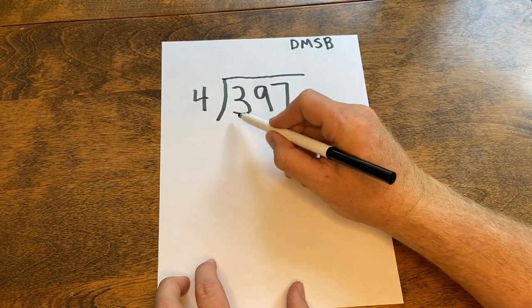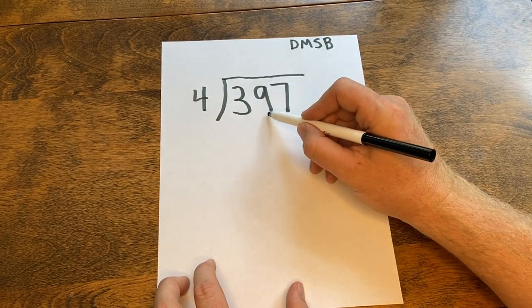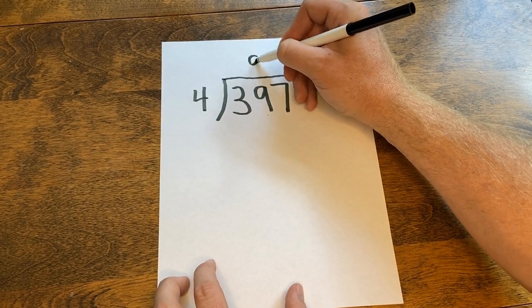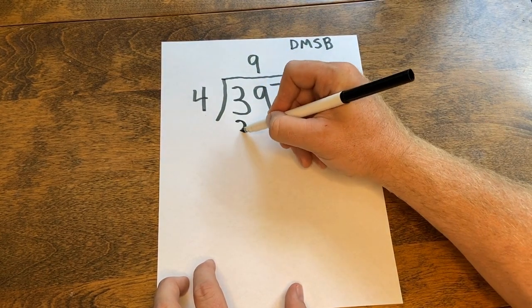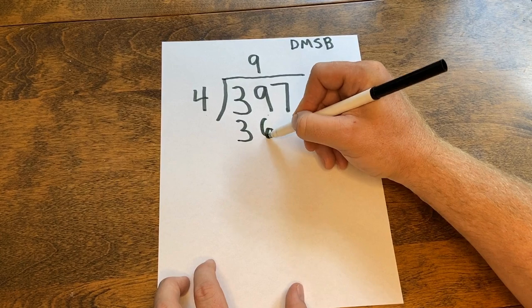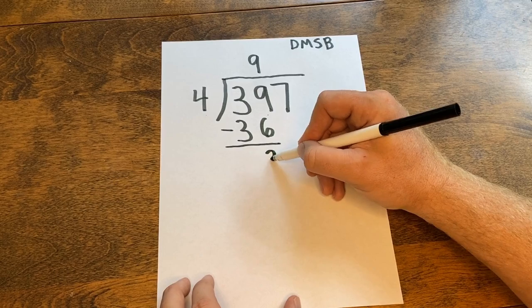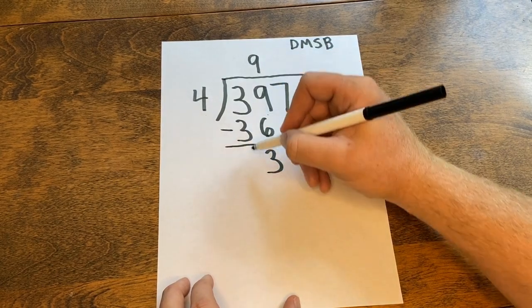4 cannot go into 3. 4 goes into 39, 9 times, which is 36. 9 times 4 is 36. I'm going to subtract. 9 minus 6 is 3. 3 minus 3 is 0.